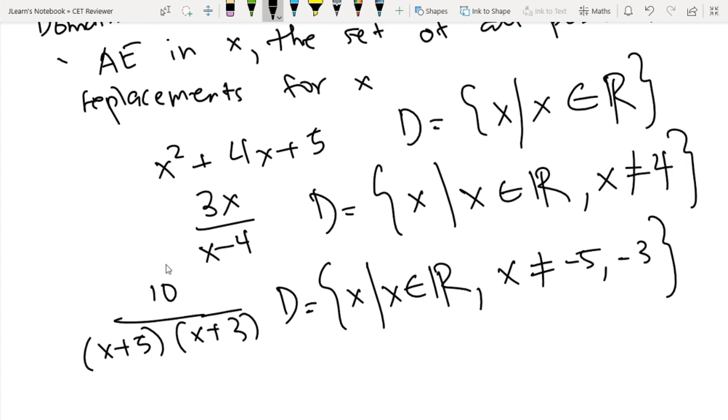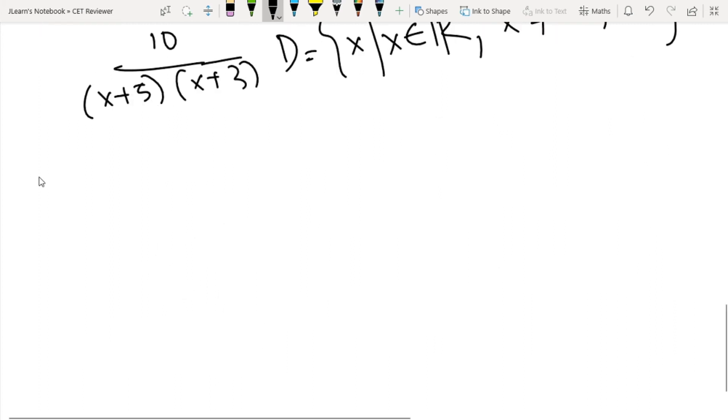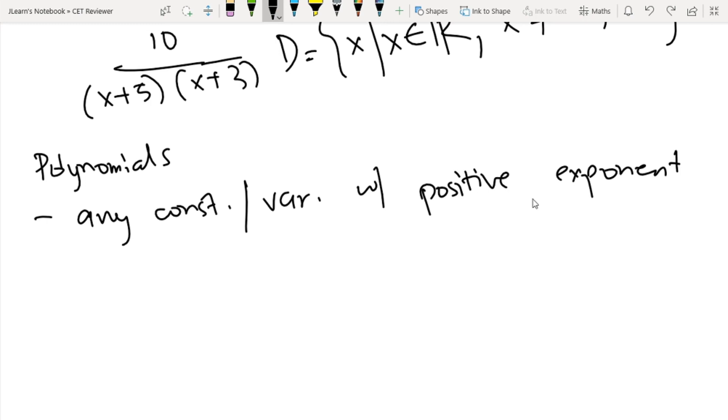Next, now we need to learn is about polynomials. So ang polynomials basically is any constant or variable with a positive integer exponent, or a product of constants and variables.